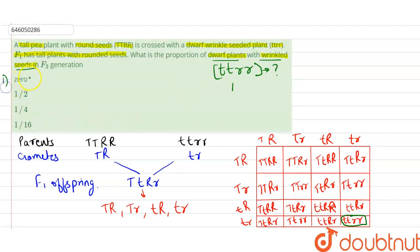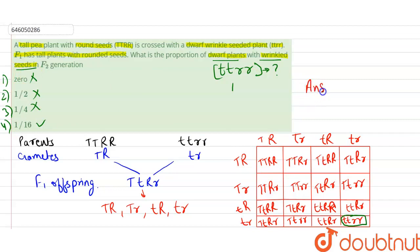The correct option is option 4: 1/16. Out of 16 offspring, one is a dwarf plant with wrinkled seeds. So the correct answer is 1/16. I hope you understood — thank you very much.